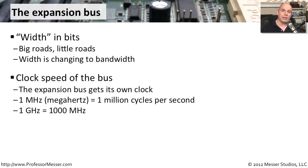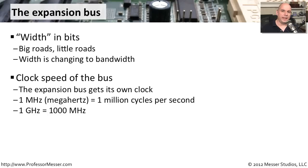We'll often refer to the clock speed of the bus. That refers to how much data is passing by every second, or every time we have a clock cycle inside of that computer. You can see that the expansion bus itself has its own clock — it's not required to run at the same speed as the CPU. If we were to look at the specifications of a computer, we normally will see a clock speed associated with the speed of that PC, and that's usually referring to the speed of the CPU that's on the motherboard.